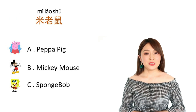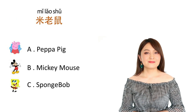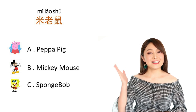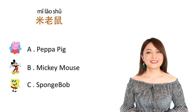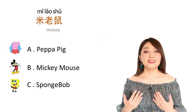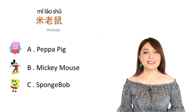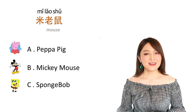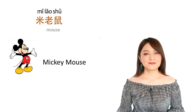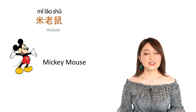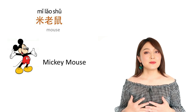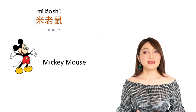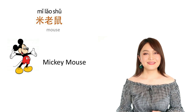第一个，米老鼠。 是哪一个？ Which one is it? 老鼠 is mouse or rat. That's right, it's Mickey Mouse. 米 is translated from the sound Mickey. 米老鼠 — Mickey Mouse.